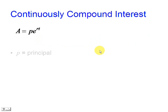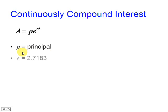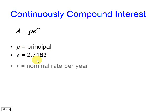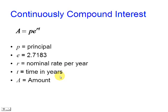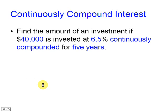This is the formula to be used: A = Pe^(rt), where P is the principal, e is the base of natural logarithms, r is the annual rate, and t is the time in years. The formula finds out the amount of money that you'll have after those years.